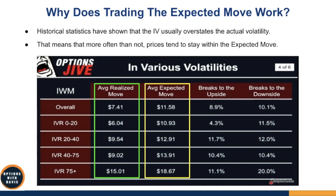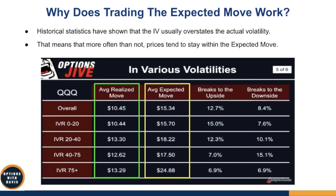For IWM — the Russell 2000 Index ETF — again in all instances the expected move overstates the actual realized move. That means the premium which you're selling and collecting is based on the expected move, but you should have actually gotten lesser. They are giving you more than what you should actually be getting, and that is how you can profit from market-neutral trading strategies. The same holds for QQQ — the expected move is bigger than the actual realized move. So now that we know this, what kind of option trading strategies can we use to take advantage of this fact?